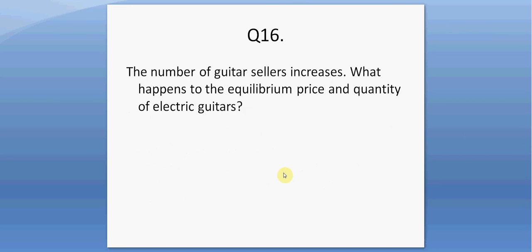Question sixteen. The number of guitar sellers increases. What happens to the equilibrium price and quantity of electric guitars? Supply shifts right, pushing down its price but increasing the equilibrium quantity.